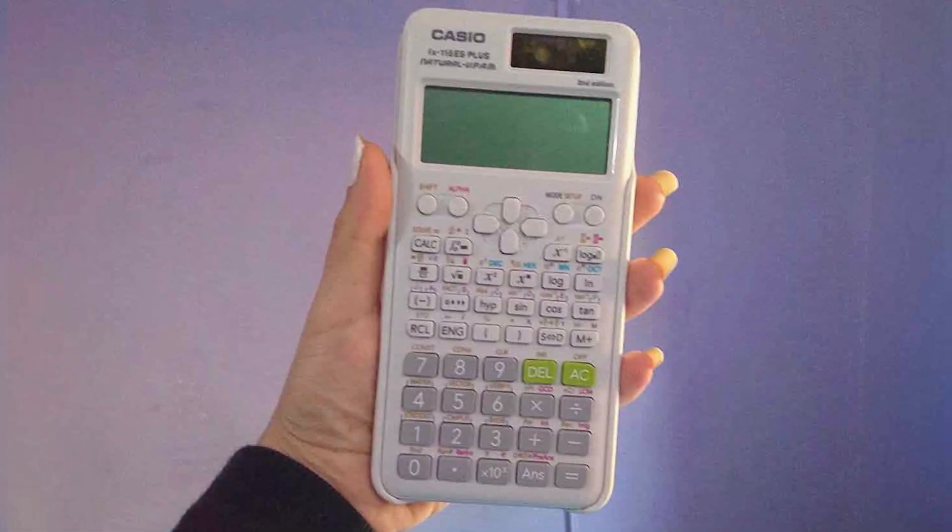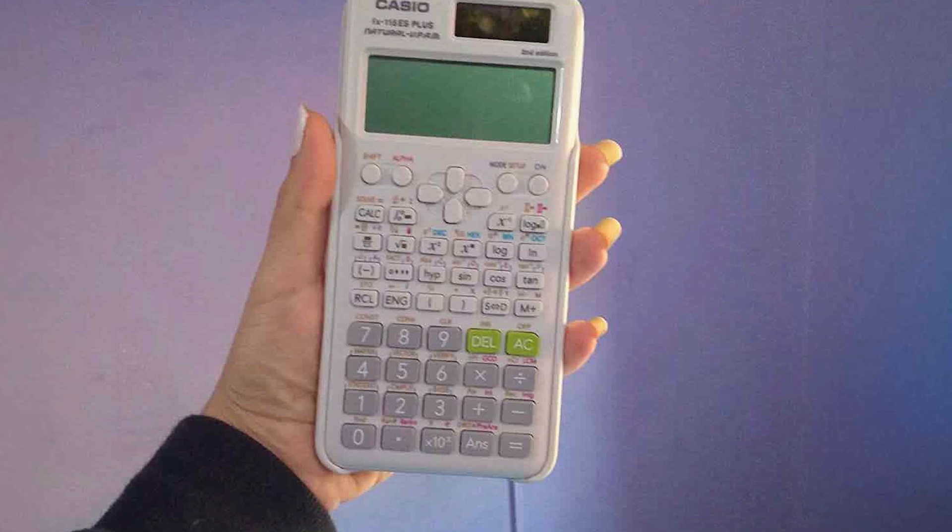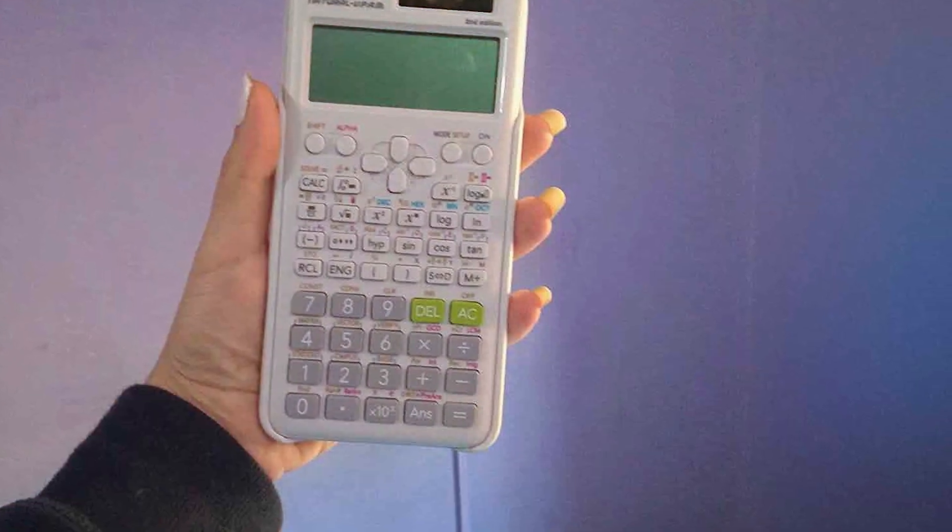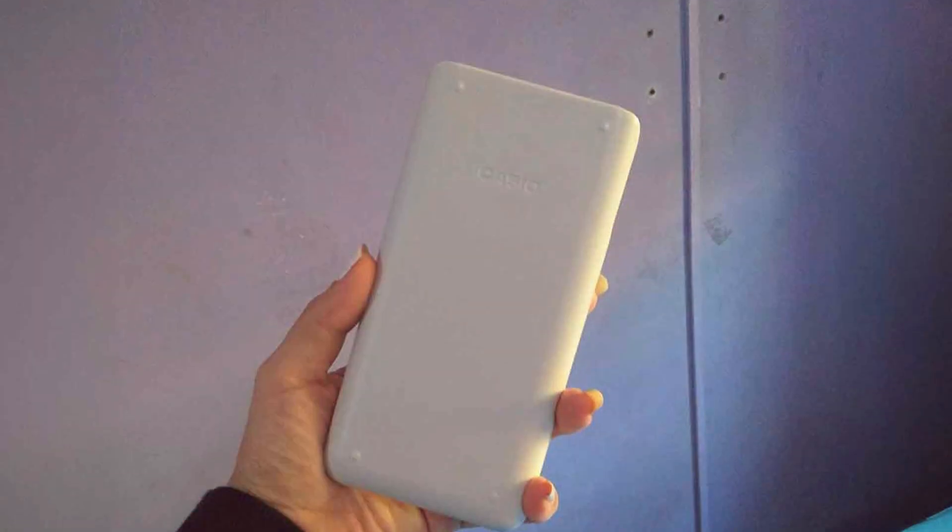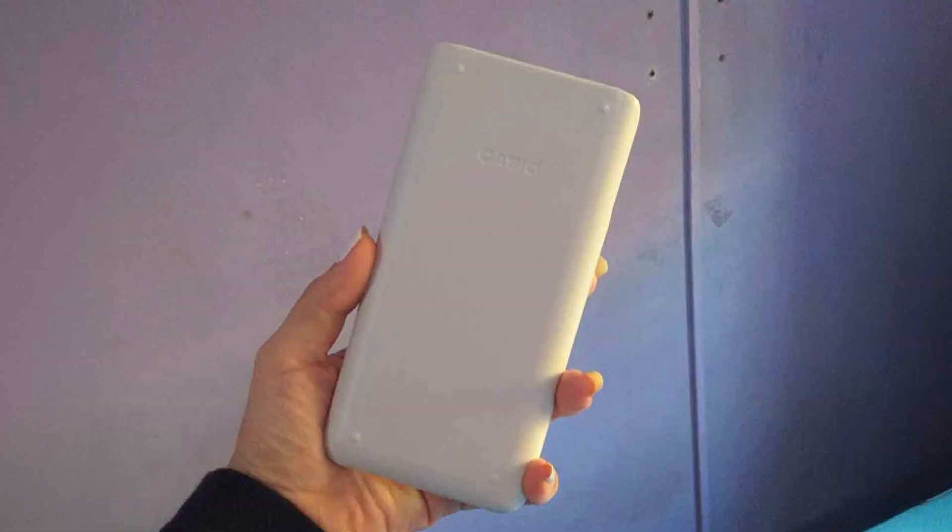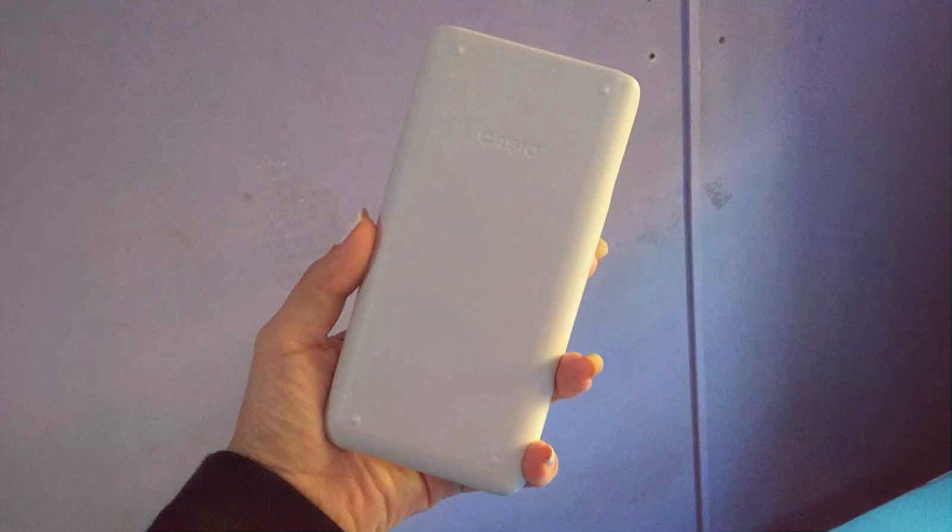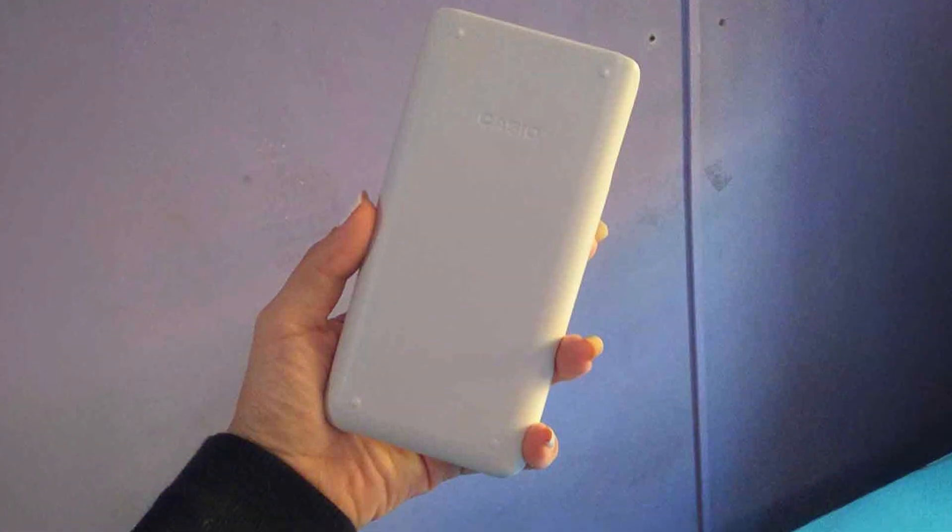One of the standout features of the Casio FX-115 ESPLUS2 is its natural textbook display, which presents fractions and equations in a format similar to what you'd see in textbooks. The calculator also includes a solar-powered option, ensuring you won't run out of battery during critical moments.